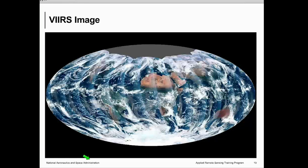There is another sensor called VIIRS, launched in 2010 on board the NPP Suomi-NPP satellite — a joint mission between NOAA and NASA. VIIRS is in many ways similar to MODIS, but there are differences as well. One notable difference is the swath coverage: MODIS has orbital data gaps, but VIIRS does not. This is due to VIIRS' larger swath width of about 3000 kilometers compared to MODIS' 2330 kilometers, so you don't see those black gaps between orbits in the VIIRS image — that's an added advantage of VIIRS over MODIS.